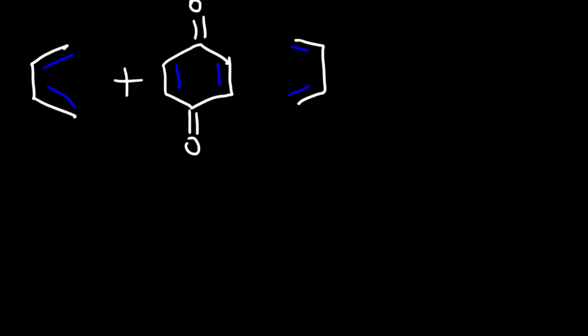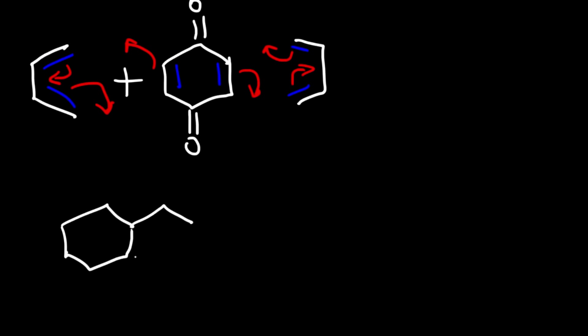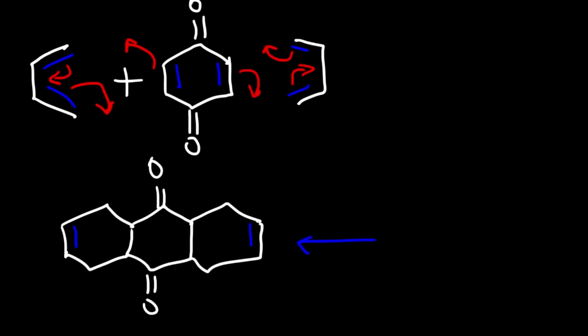Go ahead and try this problem: what is the major product? On the left we have our diene and on the right a dienophile, but notice the dienophile has a left side and a right side, so the diene can react on both sides. It can react on the right side as well, which is what happens. We get a six-membered ring on the left side and one on the right side, giving a total of three rings. This is the final answer for this reaction.